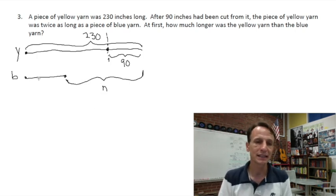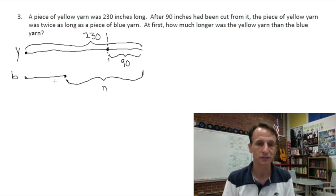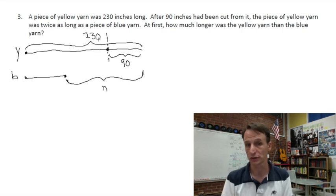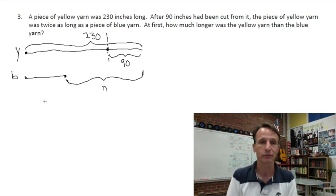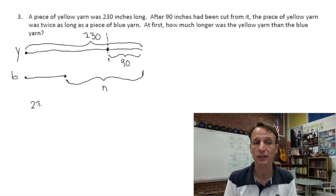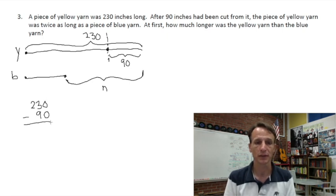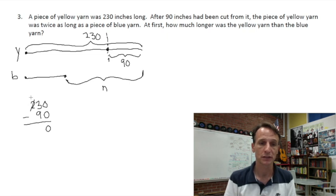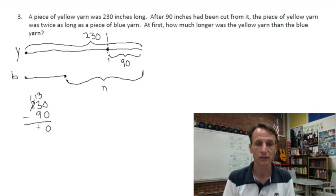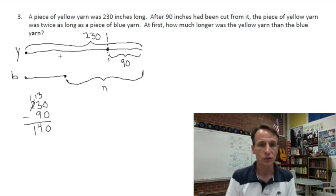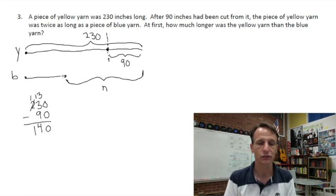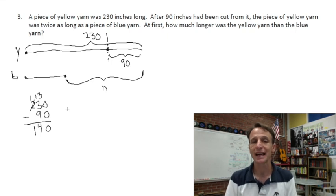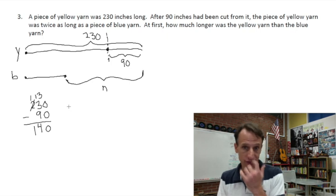So in order to solve this, we need to find the length of the blue yarn. We need to find that in order to find the difference between the 230 inches and whatever the blue is. We don't know how long the blue is. So if we take the yellow yarn starting at 230 inches and subtract the 90 that's cut off it, what do we get? 0 minus 0 is 0. And again here, we can just do 23 minus 9, or if you want to regroup, leave that 100, bring it over as 10 tens with the 3 already there. 13 minus 9 is 4. 1 minus nothing is 1.